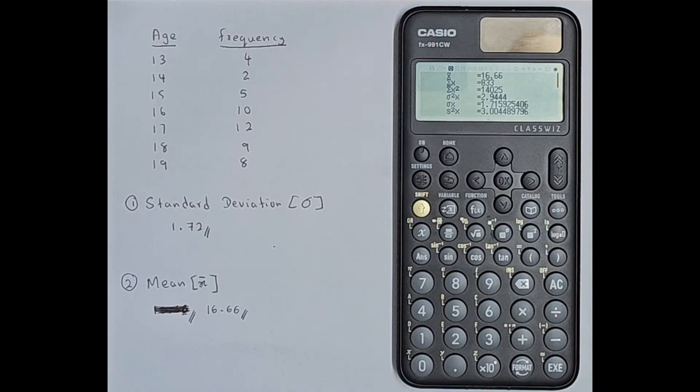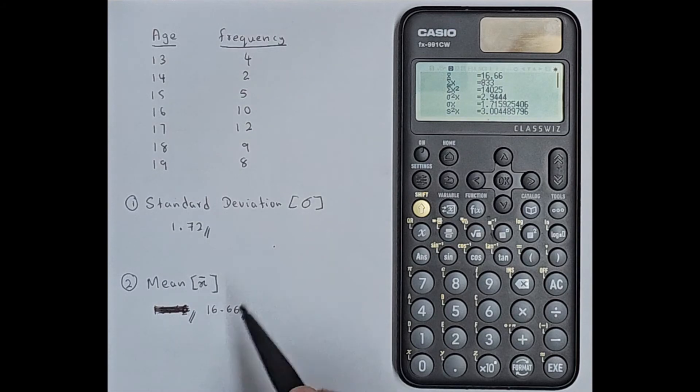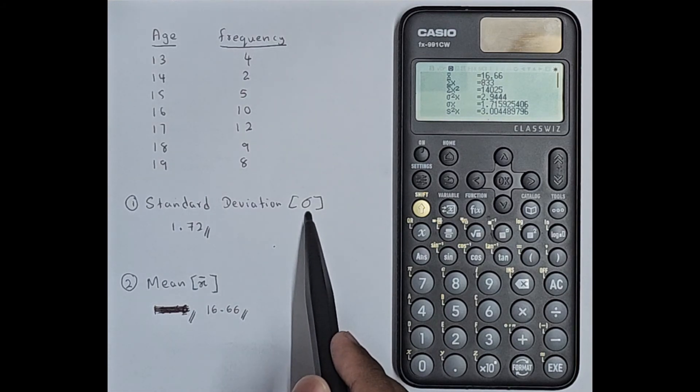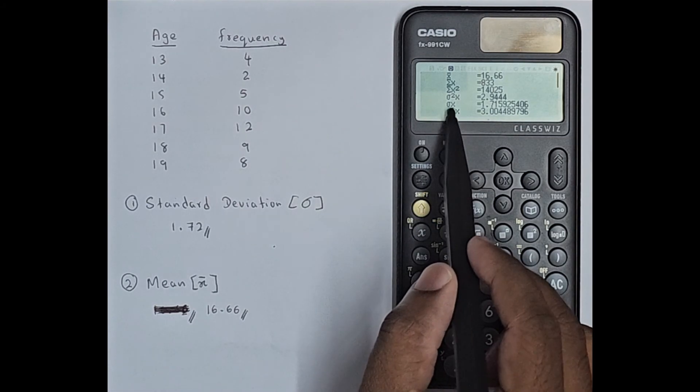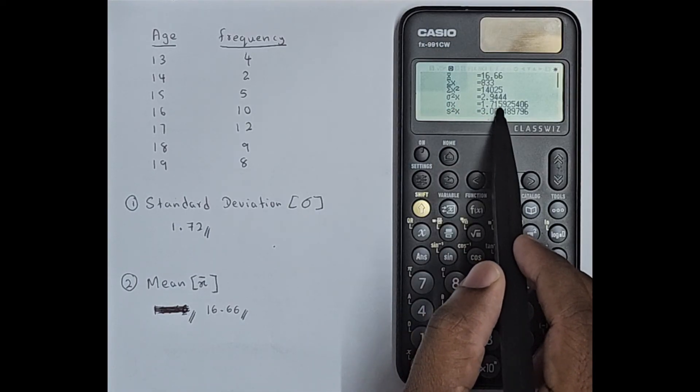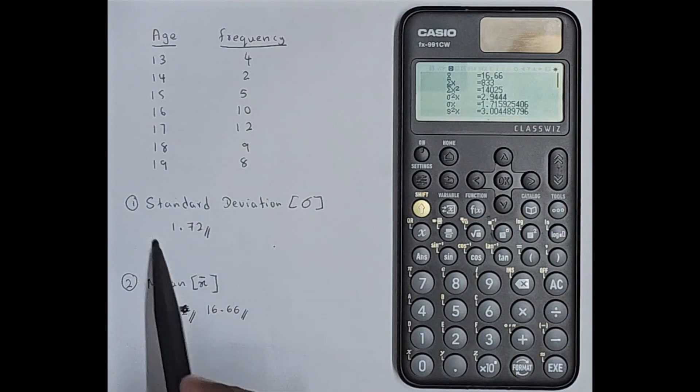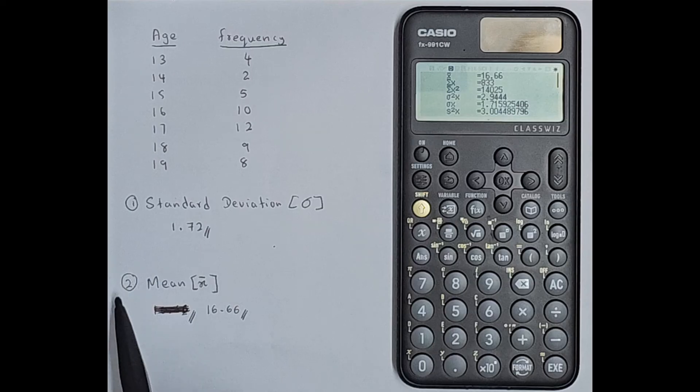Now here you can see all the answers. In this question I need the standard deviation and the mean value. So look at the sign for the standard deviation, you will have a sign like this. Standard deviation is 1.715925406. So I have rounded off to two decimal places as 1.72.